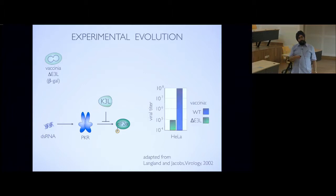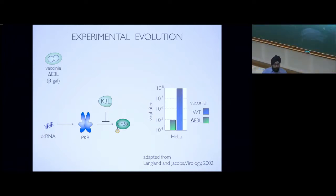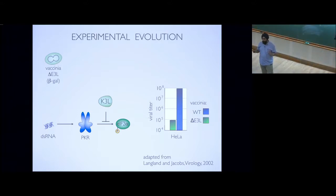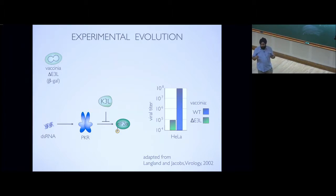We know this is true because deleting E3L means viral fitness drops by three logs of magnitude — a huge drop engineered by deletion of a single gene, because the backup gene K3L happens to be poorly adapted to humans. We did this because we were effectively pulling an elastic string back, moving the virus to a non-fit state, and then letting go to ask: how does the virus adapt now? It's facing PKR with a poor K3L — how would it deal with this challenge? This is how many experimental evolution setups are done.